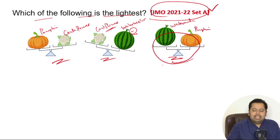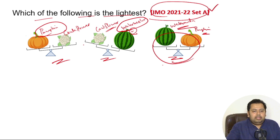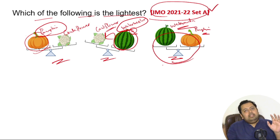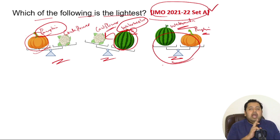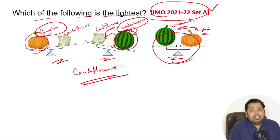So what we can see here is that pumpkin and watermelon, which weigh equally, are both heavier than the cauliflower. Here you can see pumpkin is heavier than cauliflower, and the watermelon is also heavier than the cauliflower. The weighing scale tilts toward the heavier side. So both pumpkin and watermelon are heavier than cauliflower — therefore the cauliflower is the lightest.